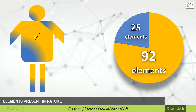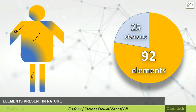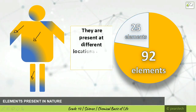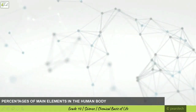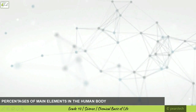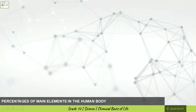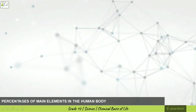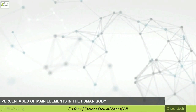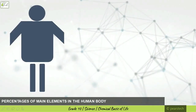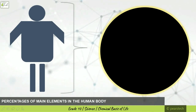These elements are present at different locations in the body in different forms. We are going to talk about the percentages of main elements in the human body. There will be something more and something less — like when talking about a wooden house, the wood will be more and bricks will be less; in a brick house, more bricks and less wood.